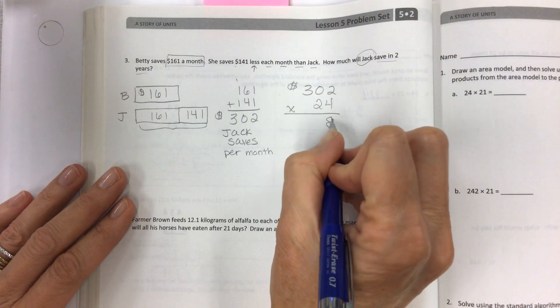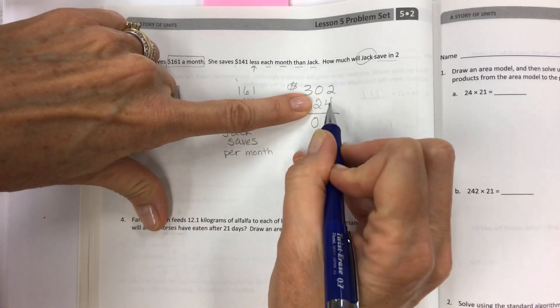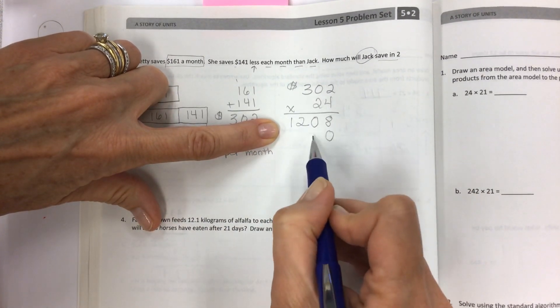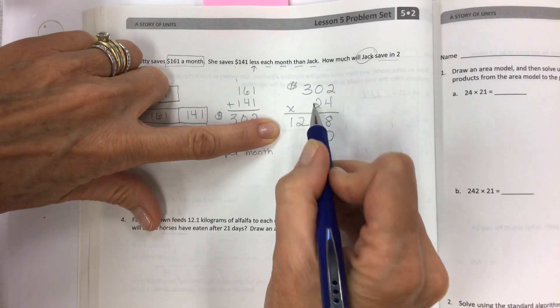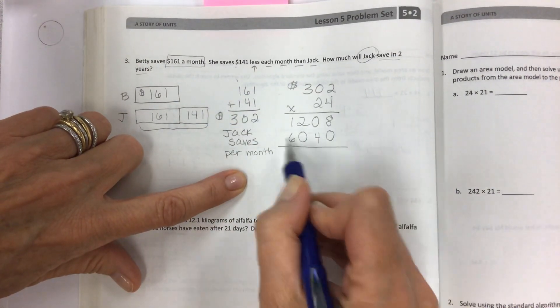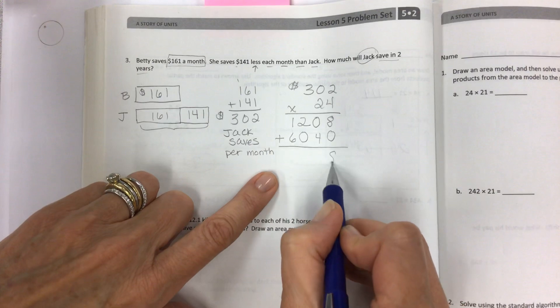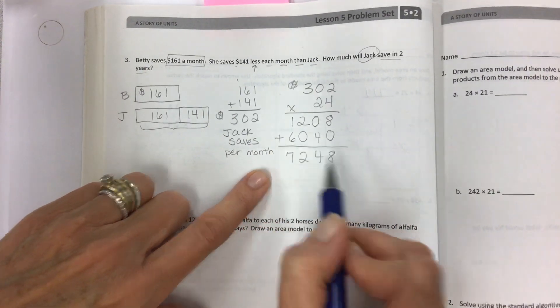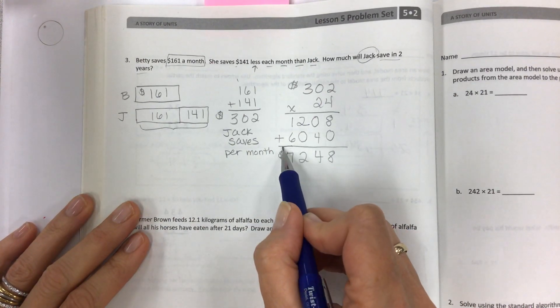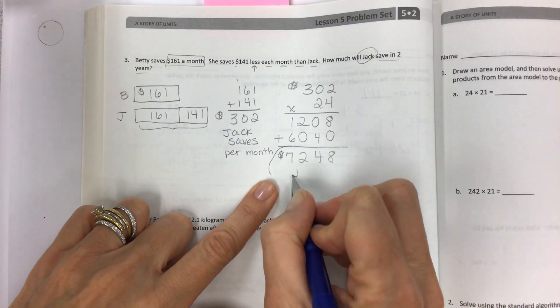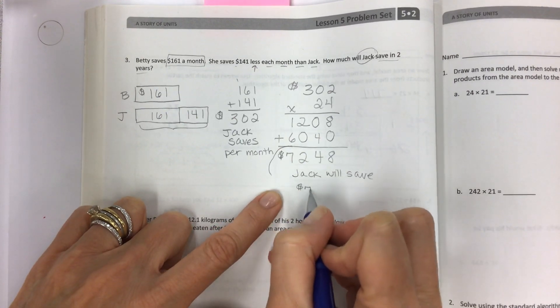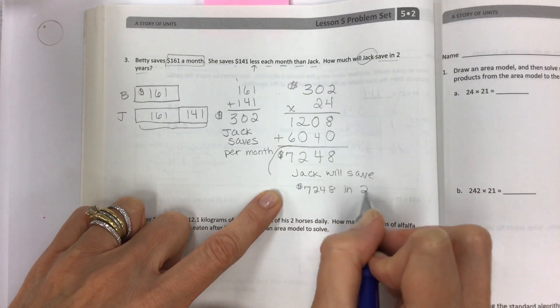Four times two is eight, four times zero is zero, hold that spot, four times three is 12. Finished with the ones place, move on to the tens: 2 times 2 is 4, 2 times 0 is 0, and then 2 times 3 is 6. Line up your digits carefully, thinking about place value. Add, and it's so easy. Now this is all in dollars. There are no cents. There is no decimal. And then you need to label your final answer. Jack will save $7,248 in two years.